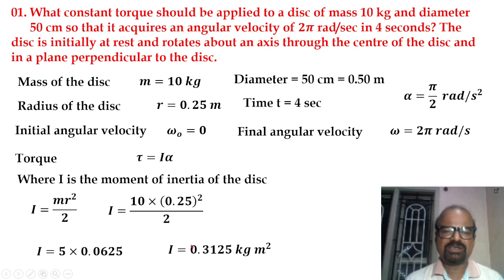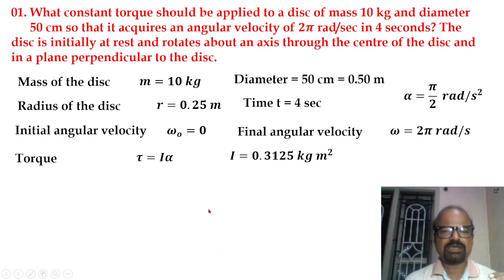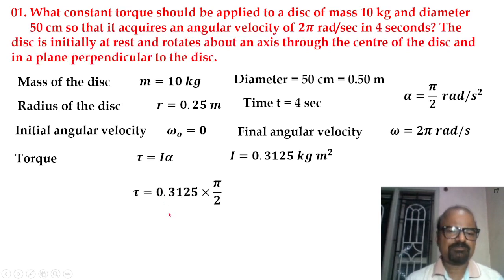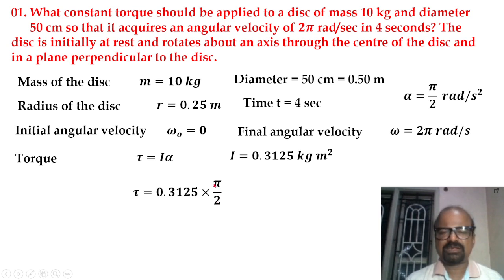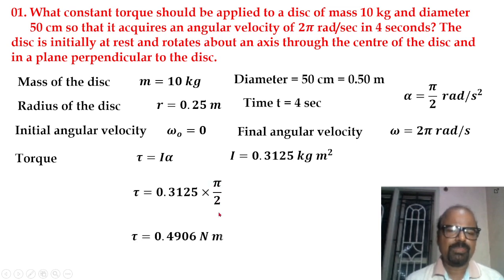Now we calculate torque using the moment of inertia and angular acceleration values. With I = 0.3125 and alpha = 5π/2 (approximately 3.14/2), multiplying these values gives us torque equal to 0.4906 N·m.